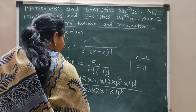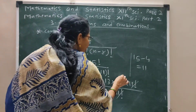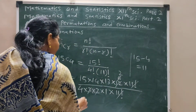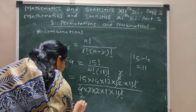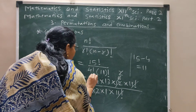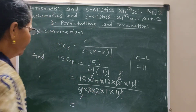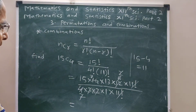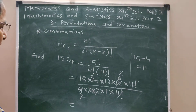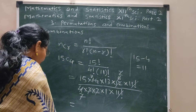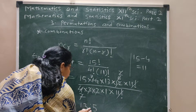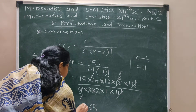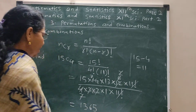After cancellation we get: 6 on top, then 3, then 2, then 4, and 2 and 2, then 2 and 7. There is no remaining term in the denominator. Calculate the numerator; the answer is 1365.